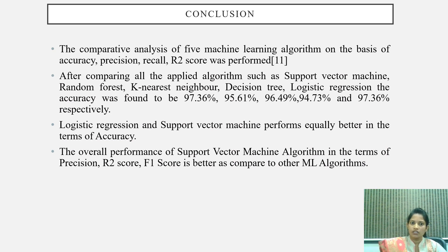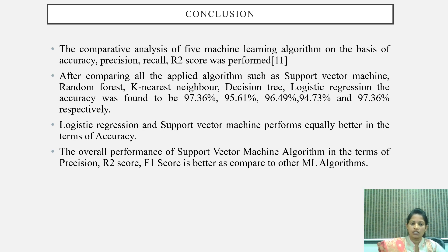After comparing all the applied algorithms — support vector machine, random forest, k-nearest neighbor, decision tree, and logistic regression — we found that logistic regression and support vector machine perform equally in terms of accuracy. However, the overall performance of the support vector machine algorithm in terms of precision, R2 score, and F1 score is better as compared to other machine learning algorithms.